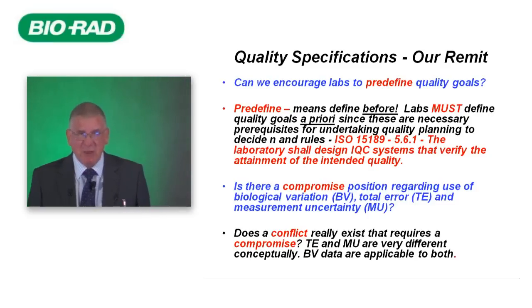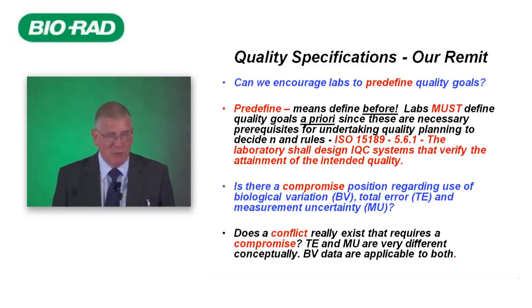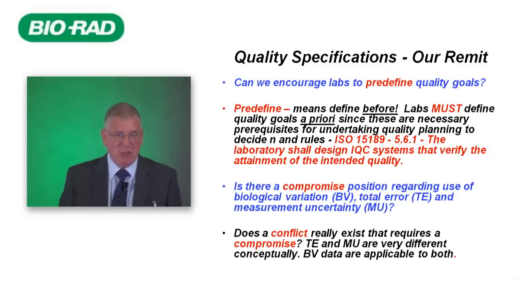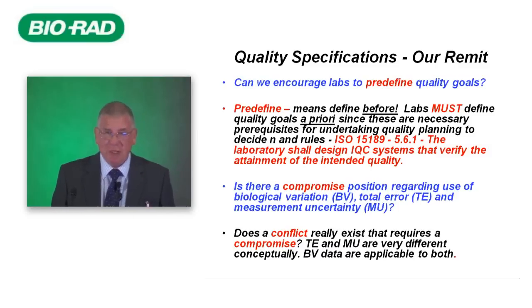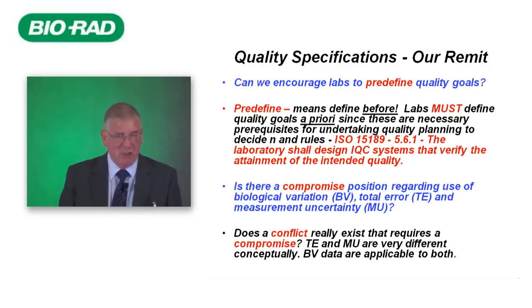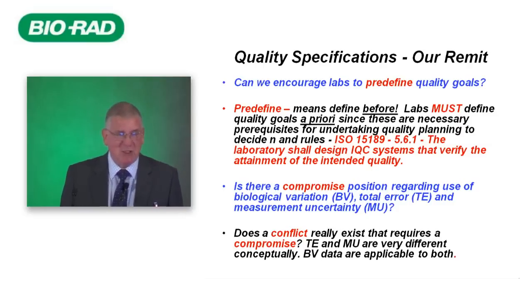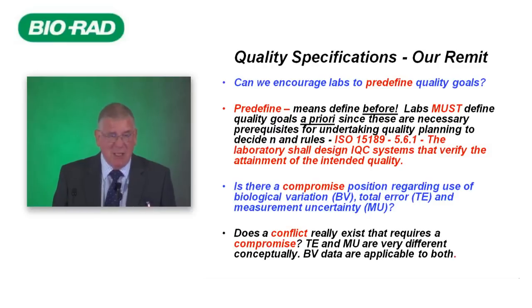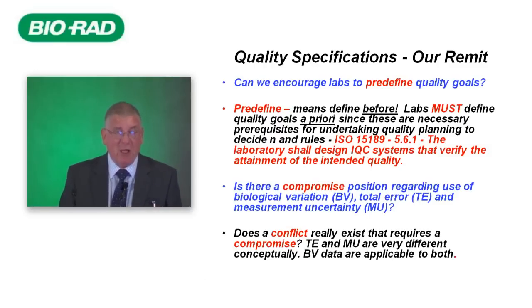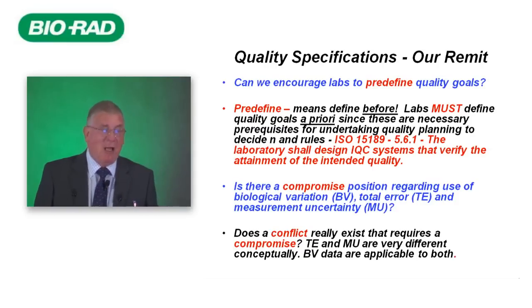The second question is rather more difficult: is there a compromise position regarding the use of biological variation, total error, and uncertainty of measurement? This is a difficult question because does a conflict really exist that requires a compromise? I personally think there isn't a conflict — that total error and measurement uncertainty are rather different conceptually, and biological variation data are applicable to both.